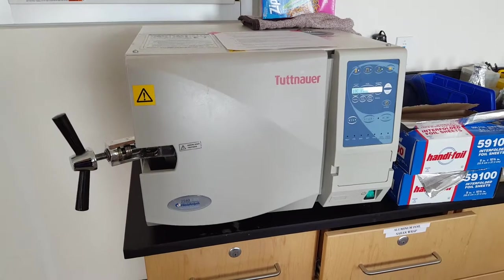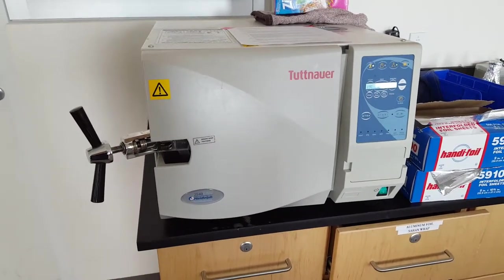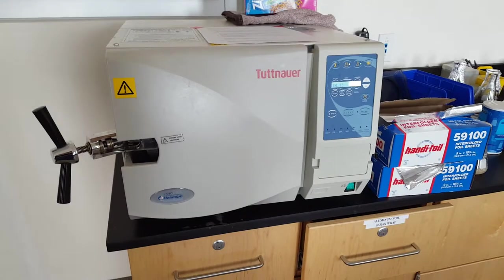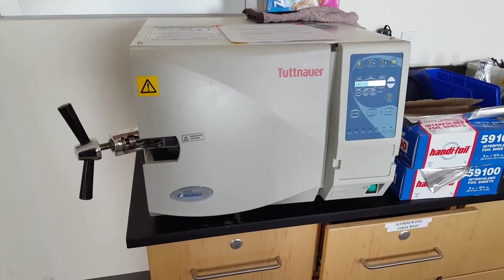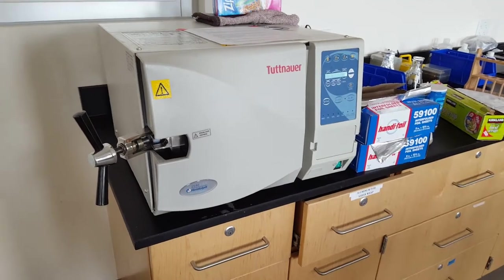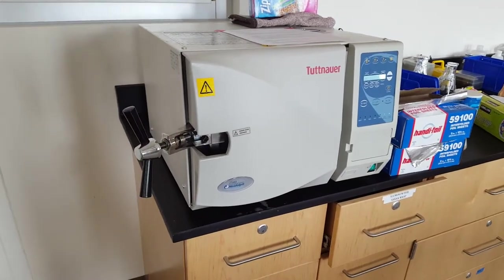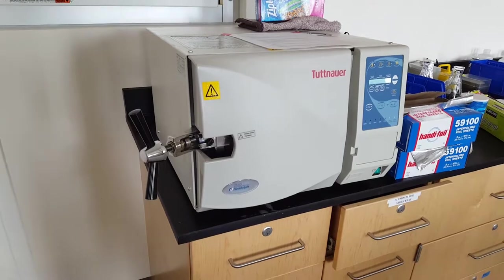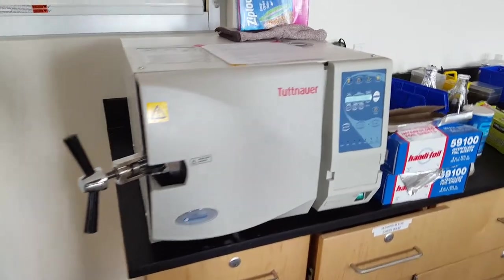Because the autoclave is kind of a long process, it usually takes about an hour or 90 minutes to run. So you should put your start time and your end time and be sure to take it out at the time that you say that you're going to take it out.